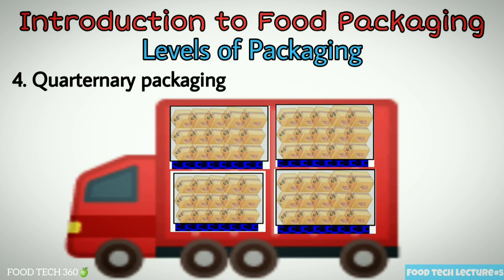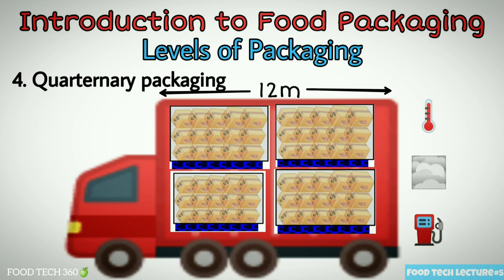Quaternary packaging is used to facilitate the handling of tertiary packaging in interstate and international trade. It is a metal container up to 12 meters in length, can hold many pallets, and is intermodal in nature. Certain containers have temperature, humidity, and gas atmosphere control to maintain shelf life.